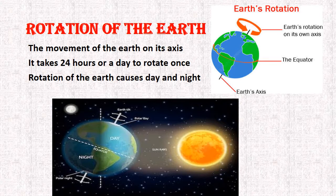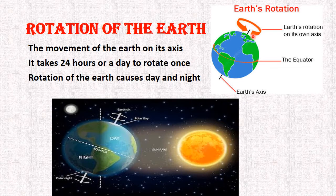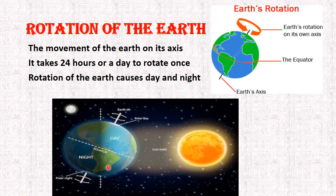Let's talk about the movement of the earth. First we will discuss the rotation of the earth. Rotation means the movement and the spinning of the earth on its own axis. As you can see in the first picture, there is an arrow showing the rotation or spinning of the earth on its own axis. Earth completes one rotation in 24 hours, or one day. Rotation of the earth causes day and night. One side of the earth facing the sun experiences daytime, while the other side not facing the sun is darker and experiences night.